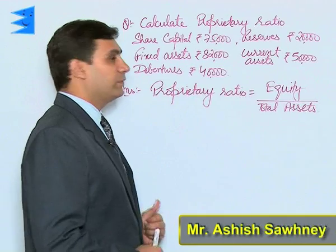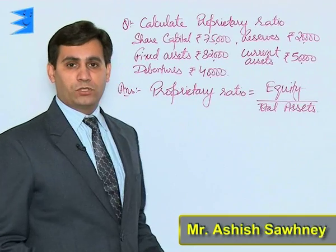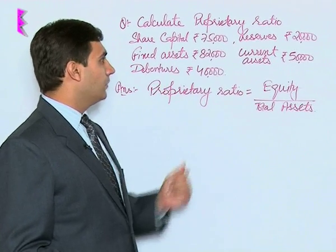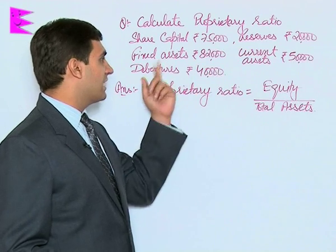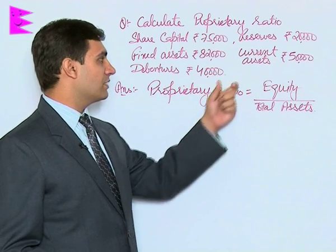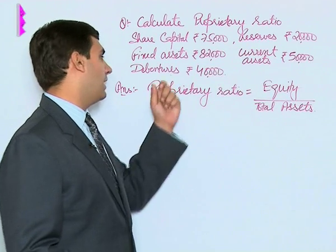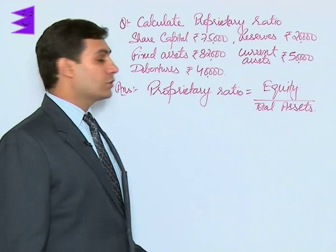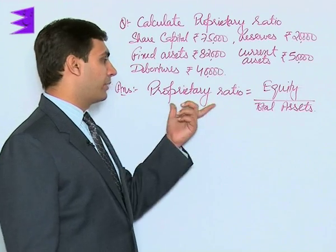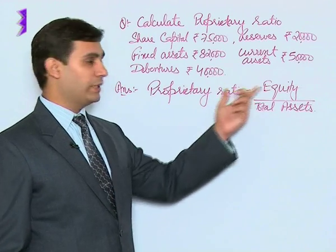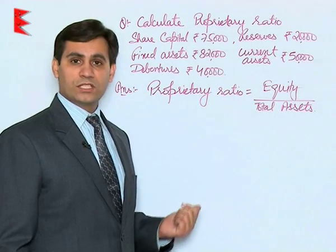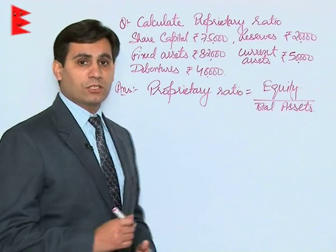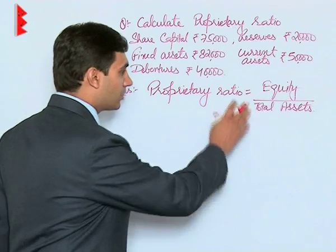Calculate the proprietary ratio from the following information: share capital, reserves, fixed assets, current assets, and debentures are given to us. The proprietary ratio is equal to equity, or shareholders' funds, divided by total assets. Let us calculate its components.